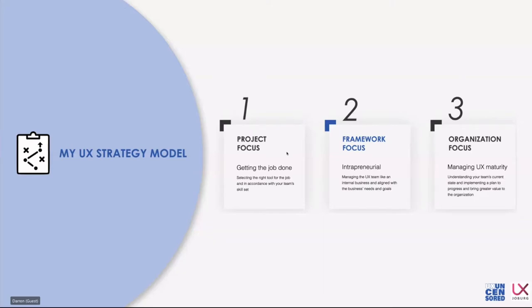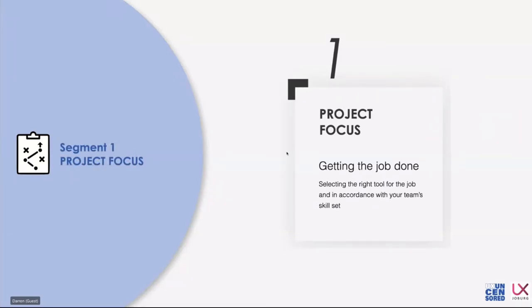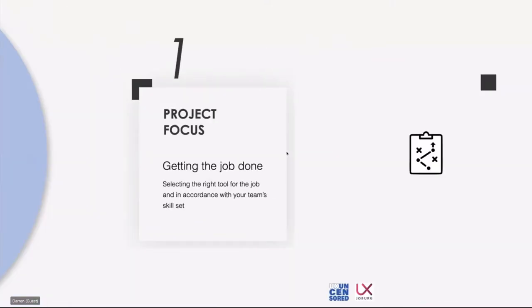Number one: project focus — this is about getting the job done, base UX operations, what every UX group should be doing. The question is: are you really planning for it, or doing everything in a haphazard fashion? We're recommending that you be more methodical and structured. That structure will help fine-tune and streamline what your team is doing and how it's viewed by others in the organization. You want to make sure you're selecting the right tool for the job in accordance with your team's skill set.